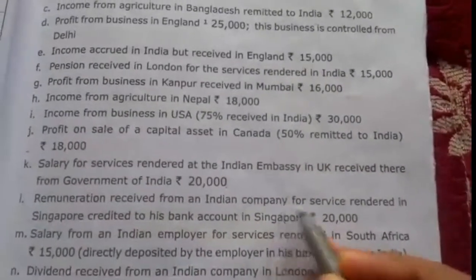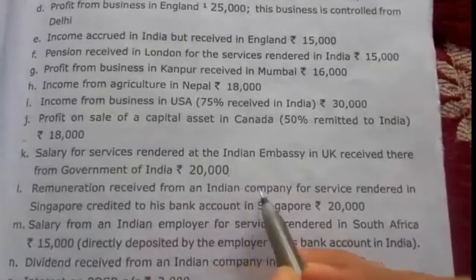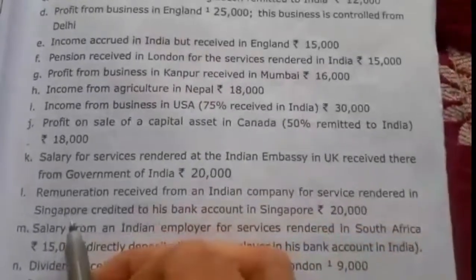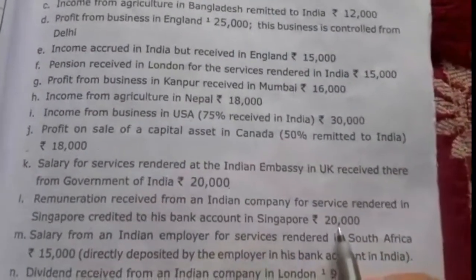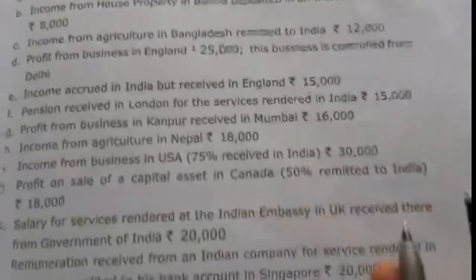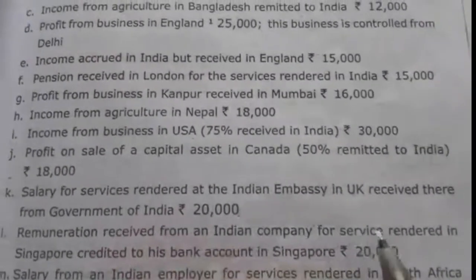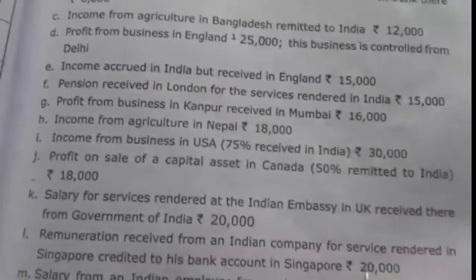Twelfth, remuneration received from an Indian company for services rendered in Singapore, credited to his bank account in Singapore Rs. 20,000. Both services rendered and receipt are in Singapore, so this is foreign income. It is taxable only in the hands of the ordinarily resident, similar to interest from a foreign branch of an Indian bank received outside India.